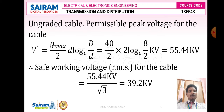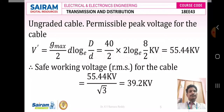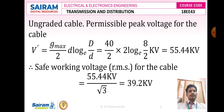For the ungraded cable, the permissible peak voltage is: V dash equals G_max by 2 times d times log base e of capital D divided by small d. Here G_max is 40, d is 2 cm, and capital D is 8 cm. The overall simplification gives 55.44 kV. Therefore the safe working voltage RMS for the ungraded cable is 55.44 divided by root 3, which becomes 39.2 kV. That is the safe working RMS value for the given cable.